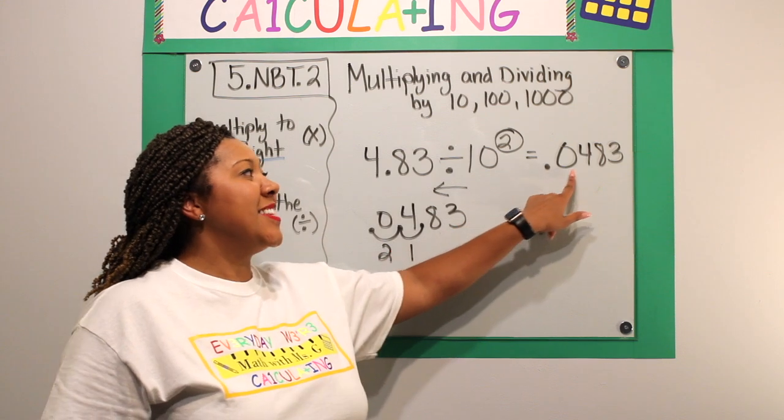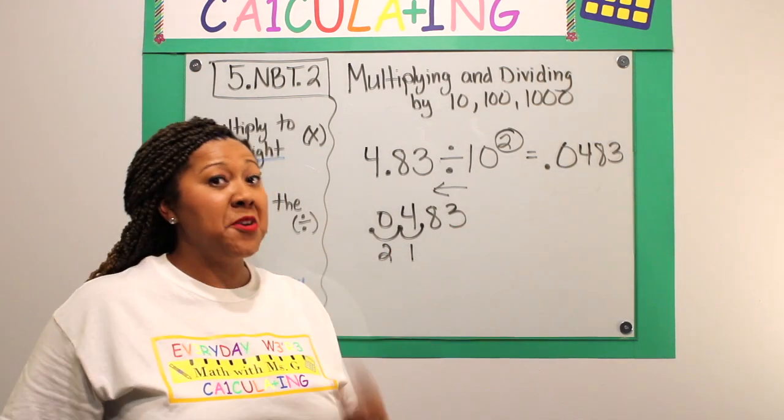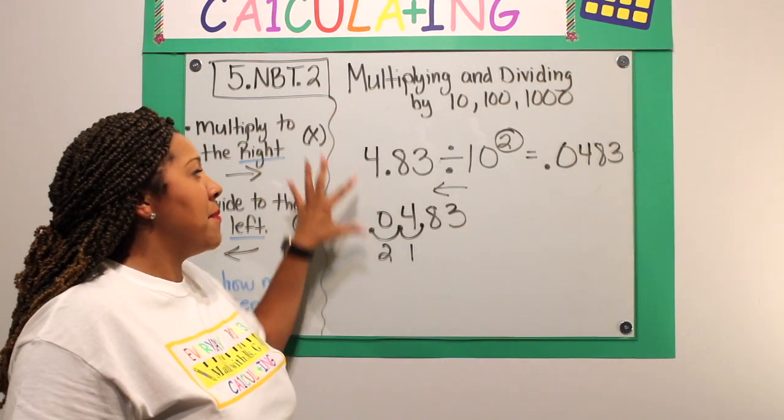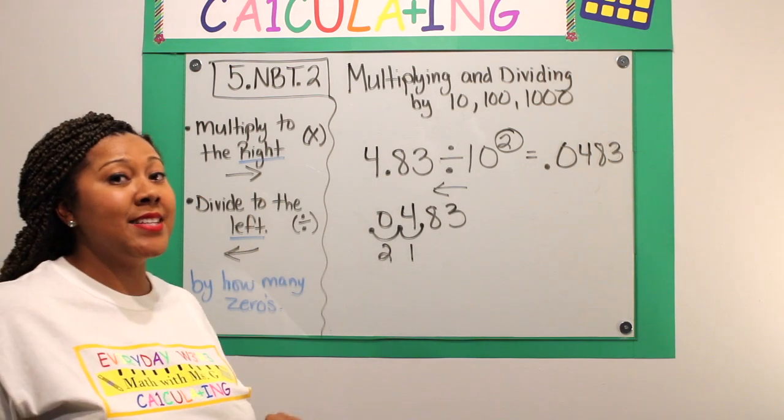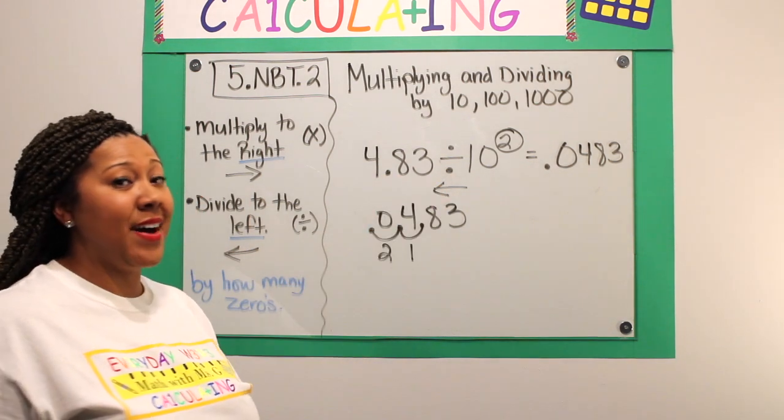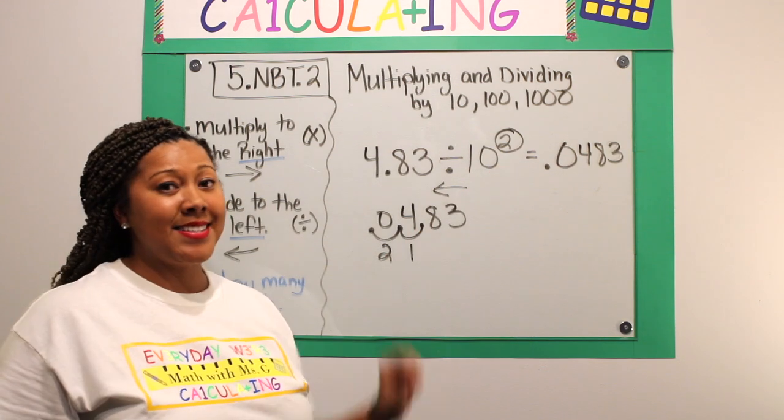If you got 0.0483, then you are correct. I brought my problem down here. I moved my decimal two places to the left because it says divide.